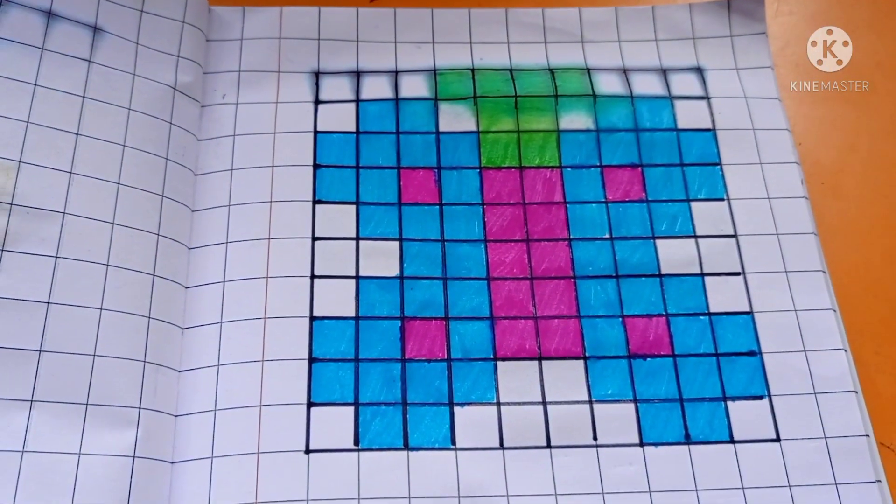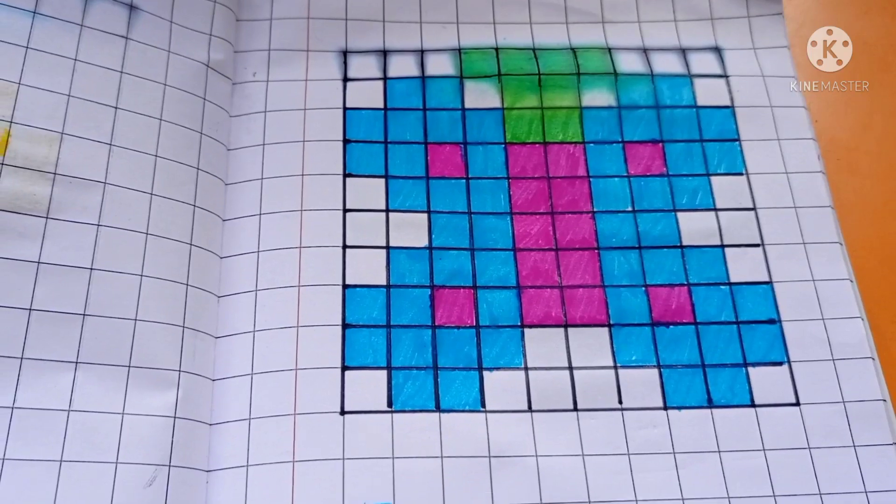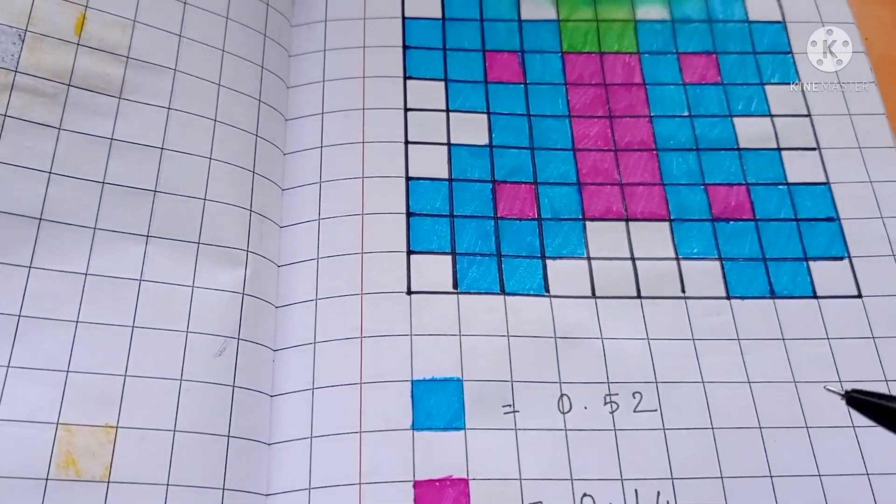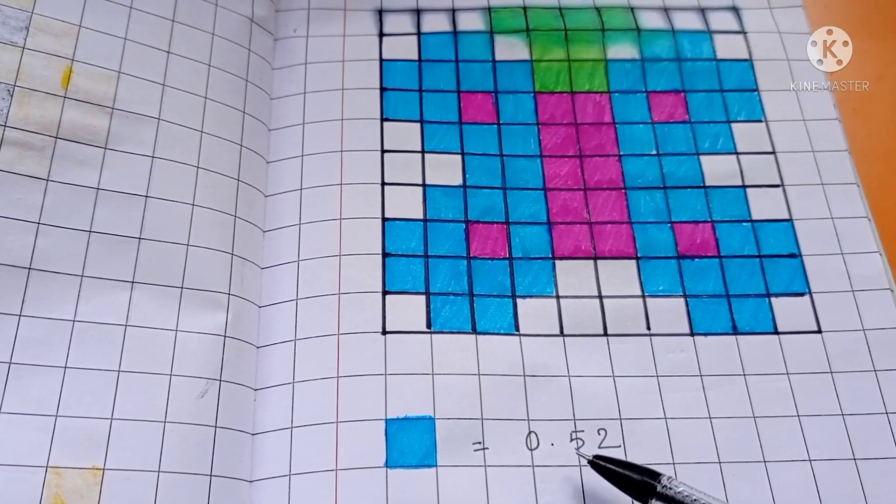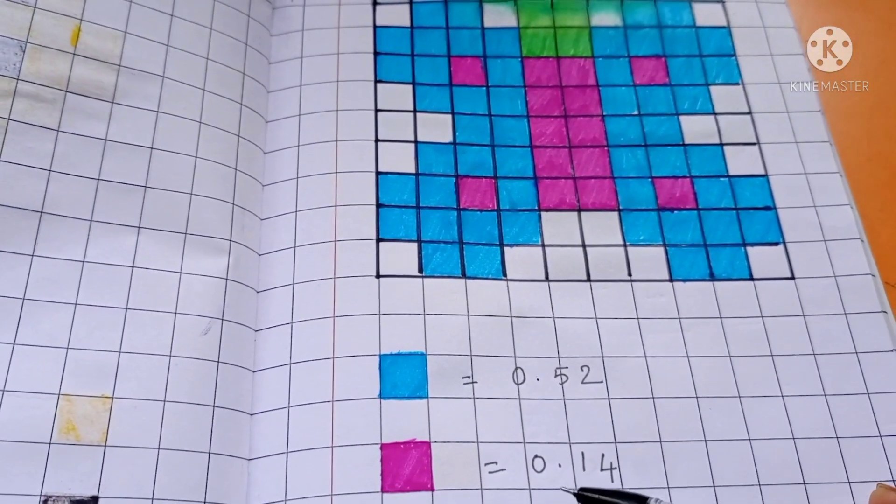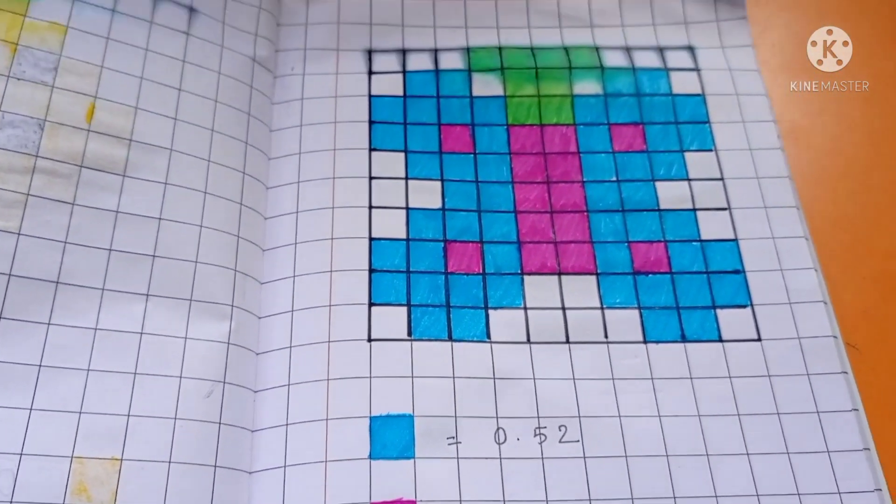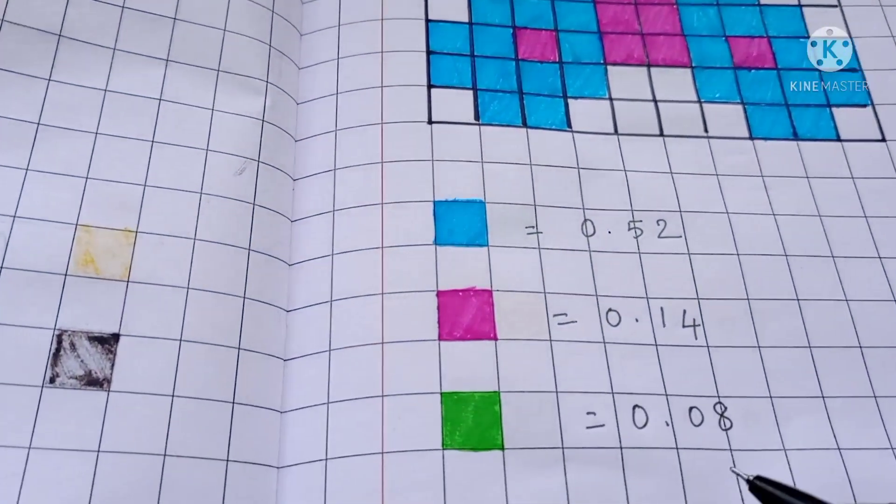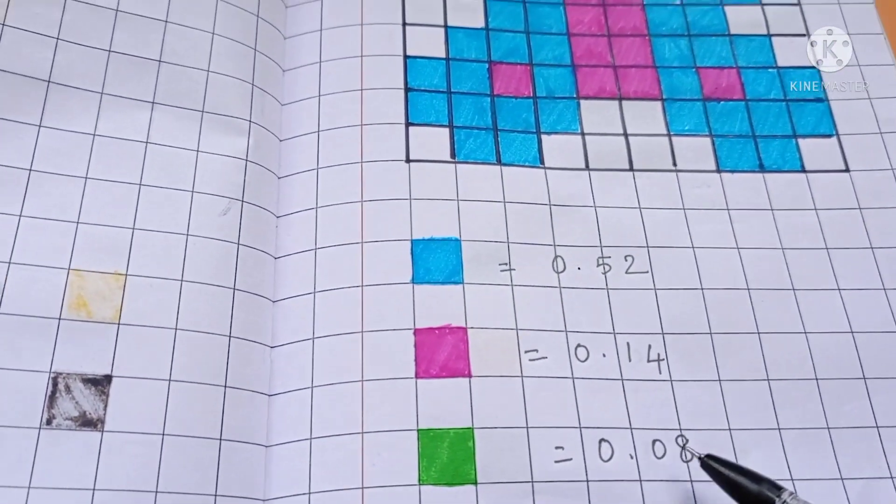5.66. Represent the colored part in decimal. Blue 0.52. Pink 0.14. And green 0.08.